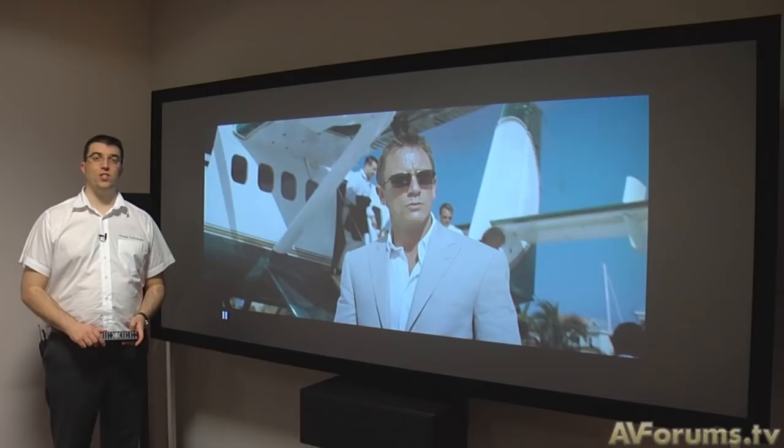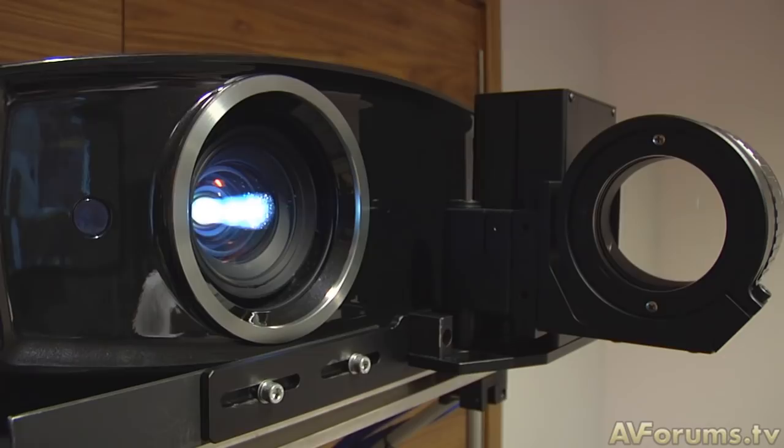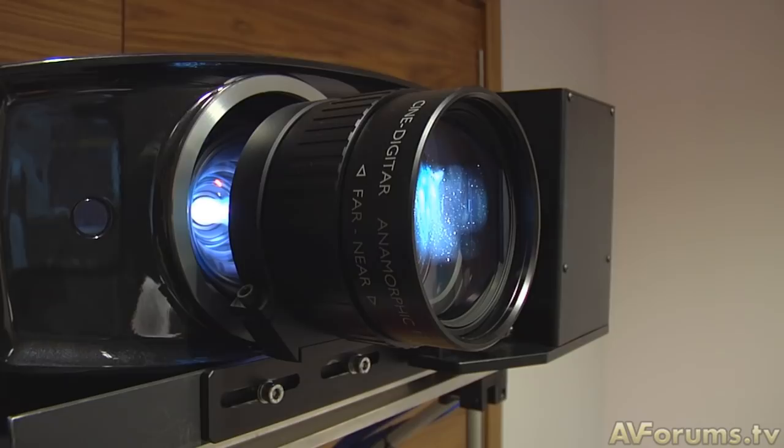There are three main elements of an anamorphic projection system. The first element is the 2.35 to 1 anamorphic screen. The second element is an anamorphic lens which goes in front of the projector. The final element is a projector which produces the necessary anamorphic stretch modes.